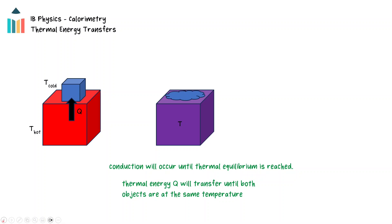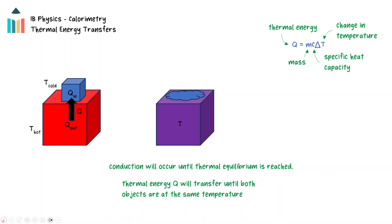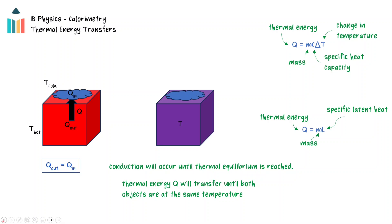Because energy is transferring from one object to another, the object at the higher temperature will be losing energy, causing its temperature to decrease or its phase to change, and the object at the lower temperature will be gaining energy, causing its temperature to increase or its phase to change. According to the Conservation of Energy, the energy lost by the higher temperature object must be equal to the energy gained by the object at the lower temperature.